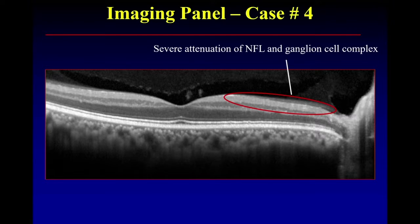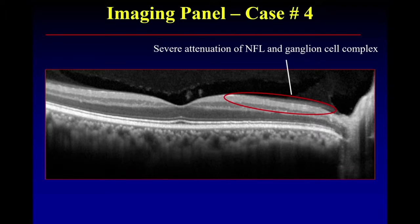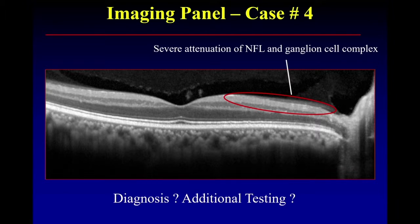You see the vitreous — it's a bit of a confounder — but that's not the normal hyperreflectivity of the NFL at all. If we were in a room full of glaucoma specialists, we might have noticed that right away. But this reminds you to look at the whole scan. Is this pathognomonic, or is there additional testing we ought to get? Definitely additional testing. You can start with some retinal imaging — never a bad idea.